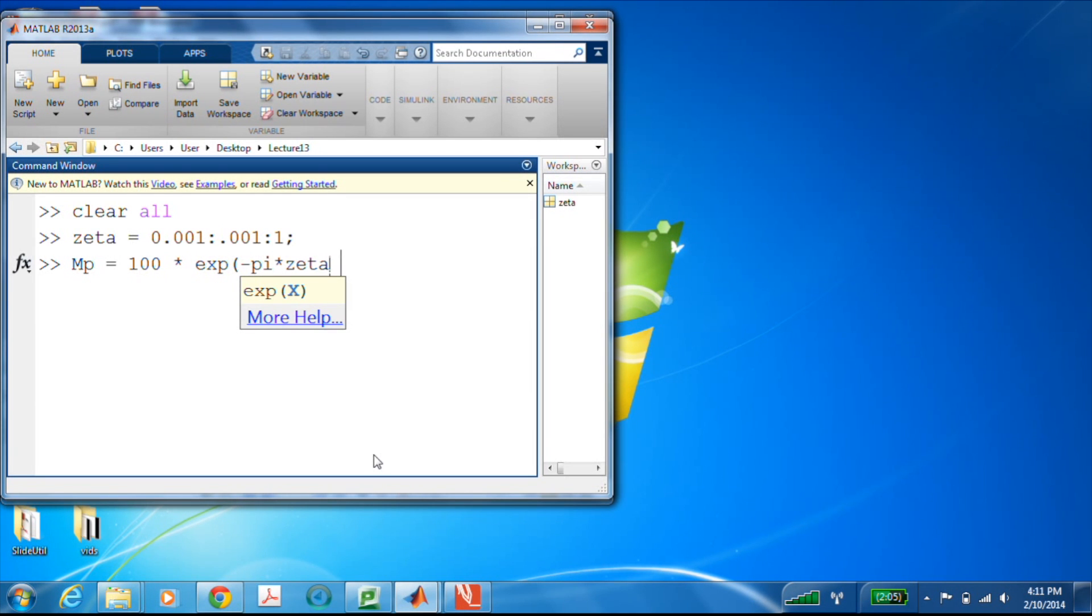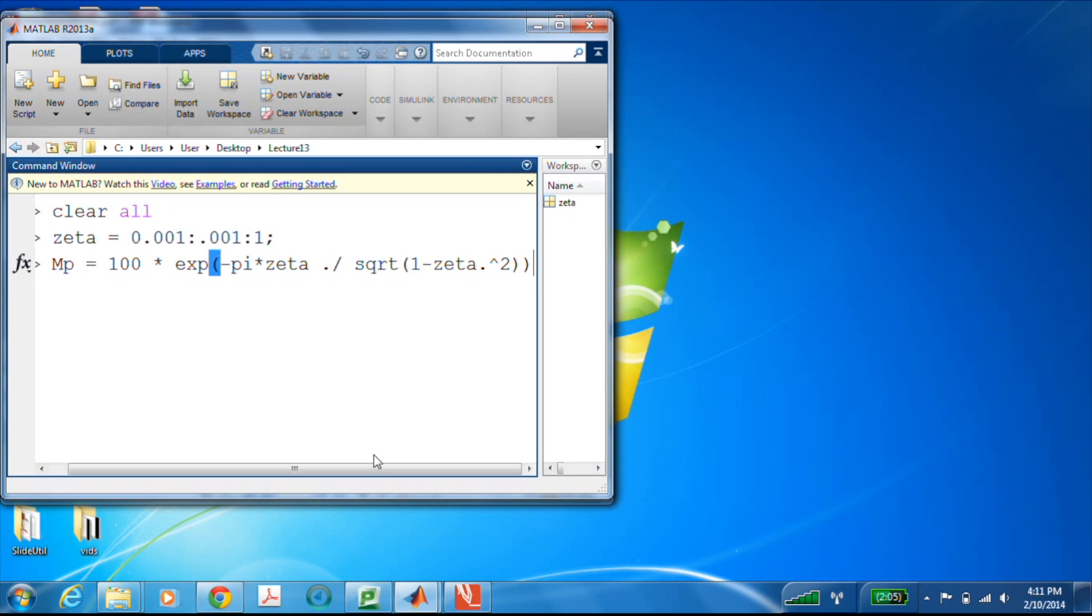And then we'll go ahead and create our percent overshoot. So that's 100 times exp of negative pi times zeta over square root of 1 minus zeta squared.